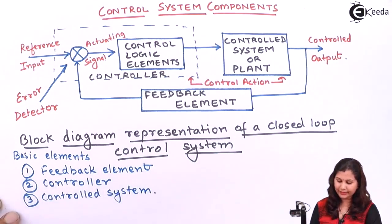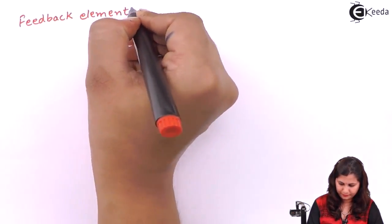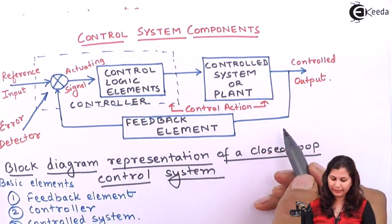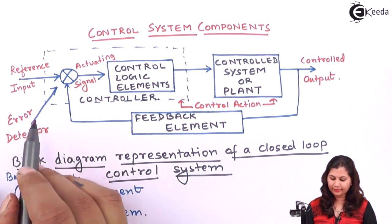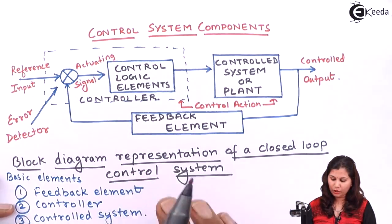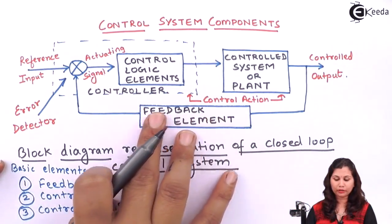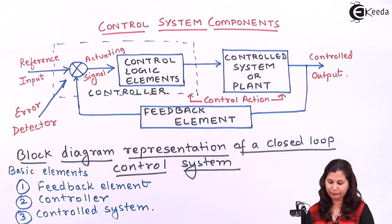Now let us study these basic elements. First we will study about the feedback element. This feedback element is used to feedback the output signal to the error detector so that the error detector can use this feedback signal for comparison. So the function of this feedback element is to feedback the output to the error detector so that the error detector can use it for the comparison process.